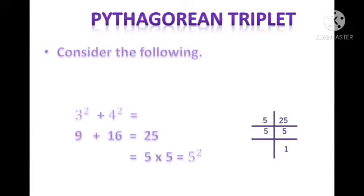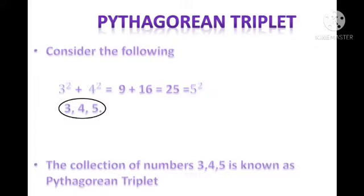9 plus 16 equals 25. Now you know that any number can be expressed as a product of equal factors. 25 can be expressed as 5 into 5, which represents 5 squared. So 3 squared plus 4 squared gives us 5 squared. The collection of numbers 3, 4 and 5 is called a Pythagorean triplet.